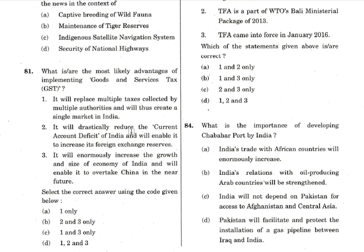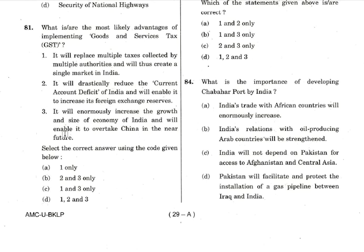Question 81: What are the most likely advantages of implementing GST? Statement one says it will replace multiple taxes collected by multiple authorities and create a single market in India — obviously true. Statement two says it will drastically reduce the current account deficit — false, as current account deficit is something else; GST is for indirect tax regime only. Statement three says it will enormously increase India's economy and enable it to overtake China in the near future — the last part about overtaking China makes this wrong. So only statement one is correct — answer is option A.